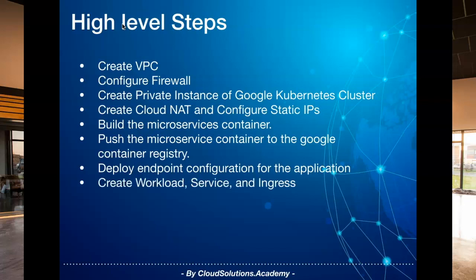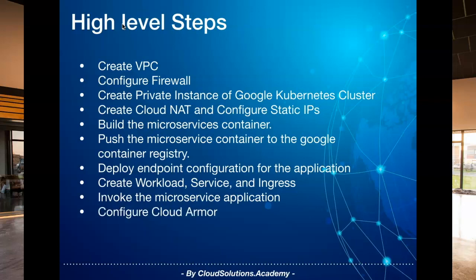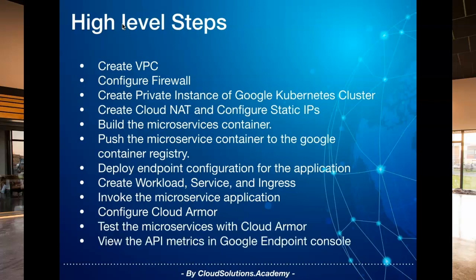Next we would create the workload, service, and ingress for our Kubernetes application. Once the application is up and running we will go about testing our microservices application. As a production application requires only trusted IPs to connect and we also need to protect our application from typical web attacks and denial of service, we would go about configuring Cloud Armor for our application. Once Cloud Armor is configured we would again test out the microservices with various Cloud Armor policies. This concludes the end-to-end setup for deploying a microservices application and setting up a production topology on Google Cloud.